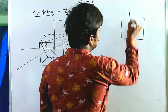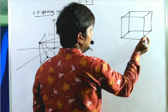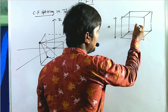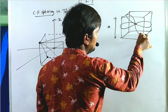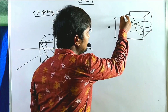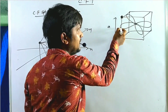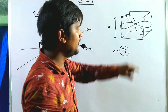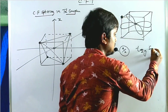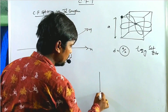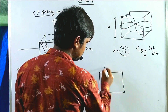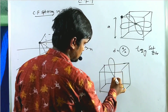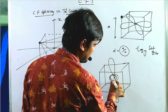Let us assume a cube where the edge length is 'a'. The ligands are oriented in between the axes. The distance between the ligand and the orbital probability is a/2. In case of the T2g set of orbitals, the distance is equal to a/2. The along-axis orbital is the dz² orbital.